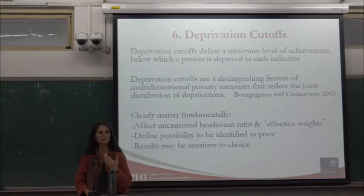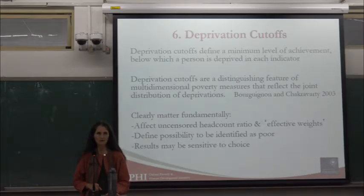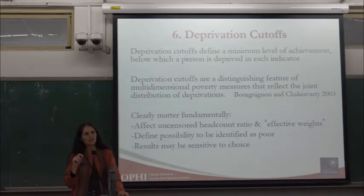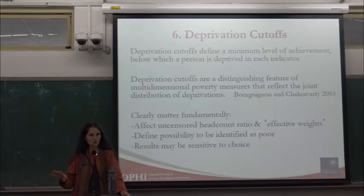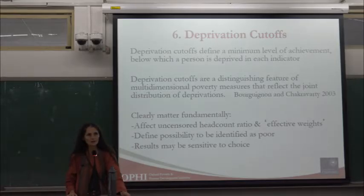Bourguignon and Chakravarty noted in their 2003 paper that the use of deprivation cutoffs for each dimension is the characteristic of multidimensional poverty measures that reflects the joint distribution — each dimension is important, so we identify deprivation within each dimension rather than adding them up and setting a single cutoff. Where you select the deprivation cutoffs matters and may matter more than the poverty cutoff empirically, just as the poverty line matters in a CDF of income. When doing sensitivity tests, sensitivity is sometimes greater to where you set the cutoffs.